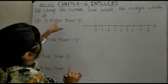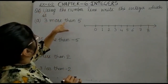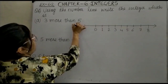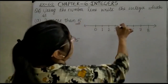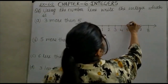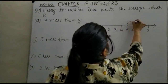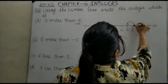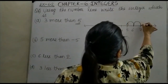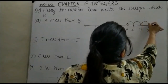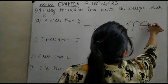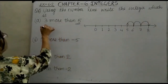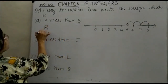We have to start with 5. You can see 3 more than 5 — so you start at 5 on the number line. This is our starting point, and you will move 3 numbers. So where are you now? At 8. So what is 3 more than 5? The answer is 8.